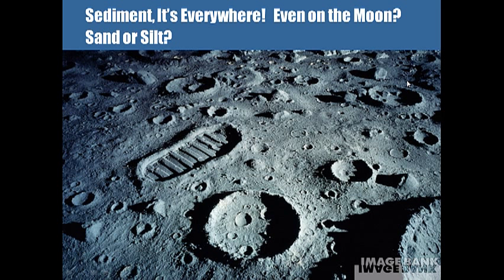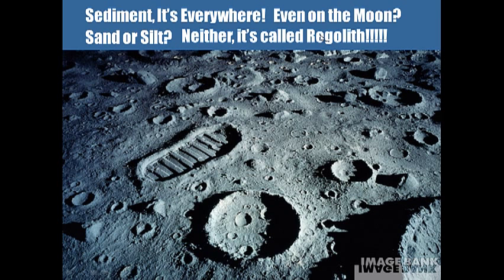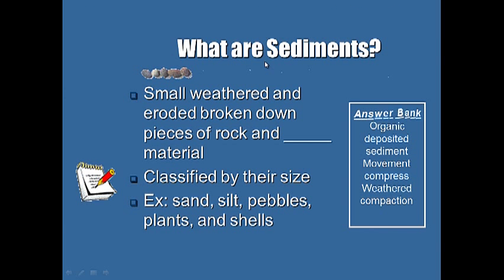Sediments are everywhere — even on the moon. When we left our footprint on the moon during the Apollo missions, that footprint is still there. Think about it: there's no wind or water, so what is making the sediment? The answer is these craters — bombardment. When things smash into each other, that's another way of eroding or weathering something, breaking rock down by meteorite collisions. Those rocks break up into fine pieces of sediment on the moon, and we call that sediment regolith.